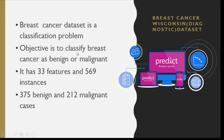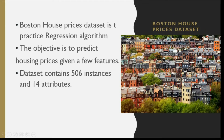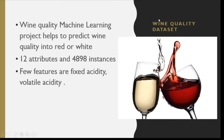Next is the Boston House Price dataset. This is a classic example of a regression algorithm, so if you want to practice regression problems, this dataset will be helpful. Here you have to predict house prices given a few features. The data contains 506 instances and 14 attributes.